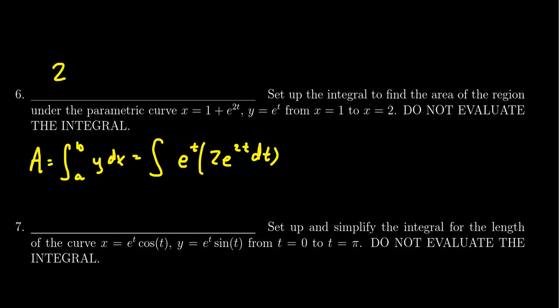I'm going to bring that 2 out in front. You have e to the t times e to the t. You can actually add the powers together. And so this becomes e to the 3t dt.